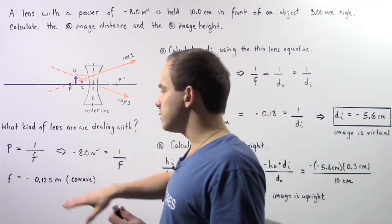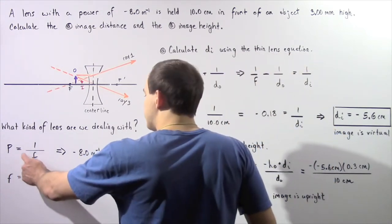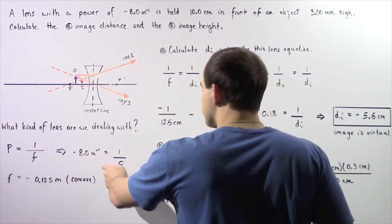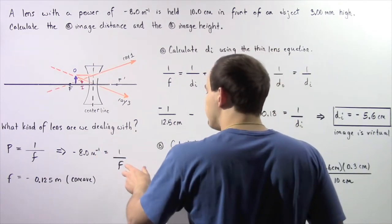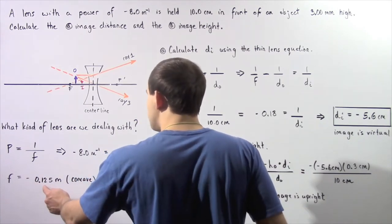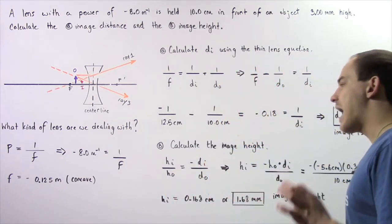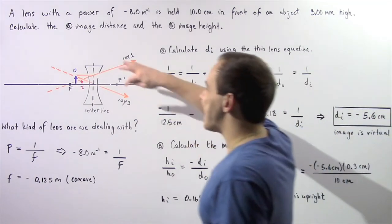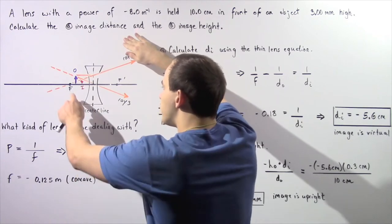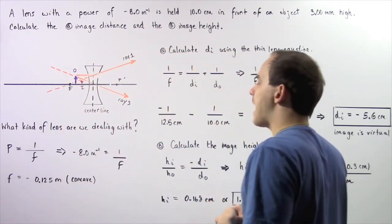Now let's use the equation P = 1/f to calculate the focal length. We know P is negative 8.0 meters to the negative 1, so solving for the focal length gives us negative 0.125 meters, or equivalently 12.5 centimeters. That is the distance from the center of our concave lens to the focal points F and F', found on two sides of the lens.